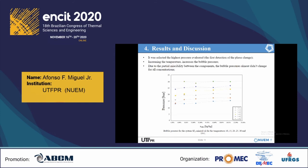A PX diagram could be built with all points obtained experimentally. For all three different techniques, it was selected the highest pressure evaluated — meaning the first detection of the phase change — for the diagrams developed in this research. It could be noticed that, as expected, increasing the temperature of the mixture, its bubble pressure would also increase. And also, due to the partial miscibility between the components, the bubble pressure almost didn't change for all concentrations.